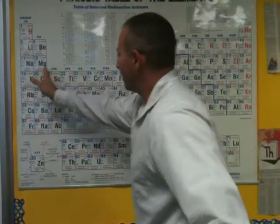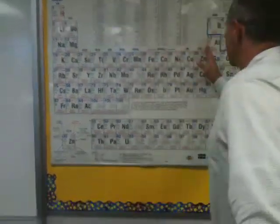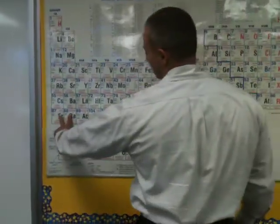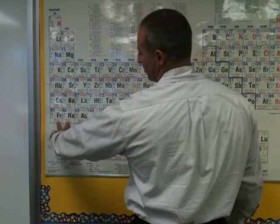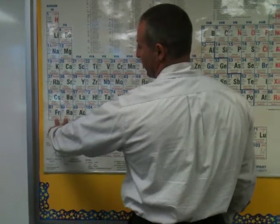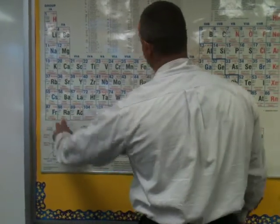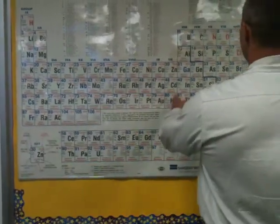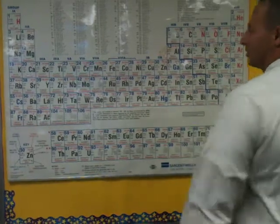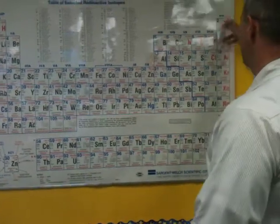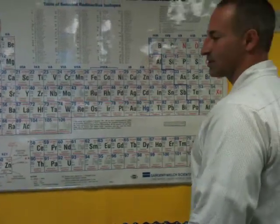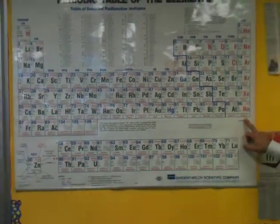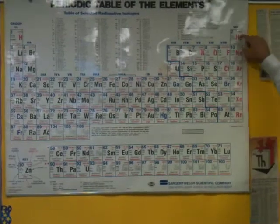D-block, from here to here, is called the transition metals. Groups 1 and 2 are called S-block, because the filling of S orbitals occurs there. This is called P-block, because the P orbitals are filling. Anything that's P6 is a noble gas, and group 18 is known as noble gases.